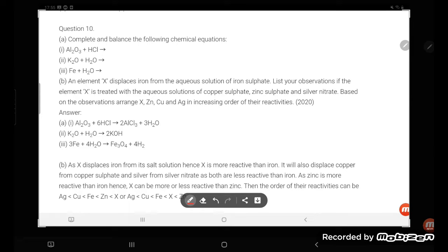Hi students, let's try to understand question number 10. Complete and balance the following chemical equation. So Al2O3 is there plus HCl, so what is it going to give student?